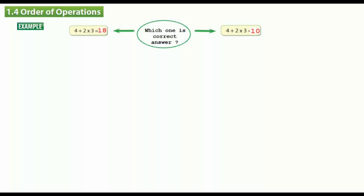Hello everybody, welcome to Math Is Live channel. Today we are going to talk about the fourth section of chapter one, which is 1.4: Order of Operations. Let's start with an example: four plus two times three.